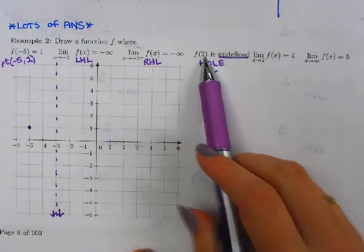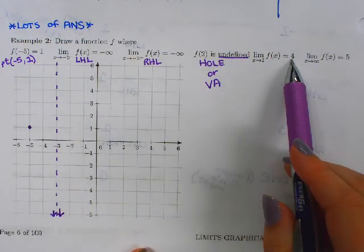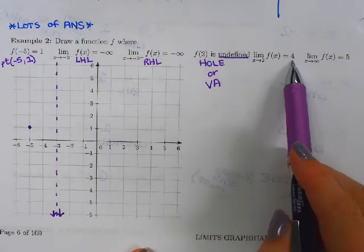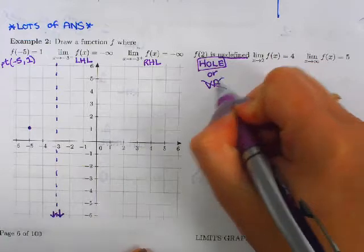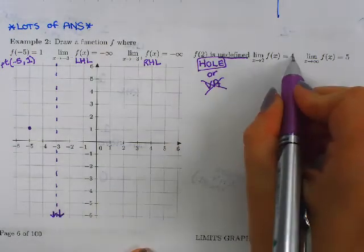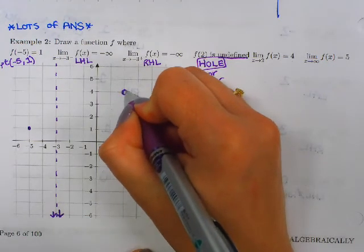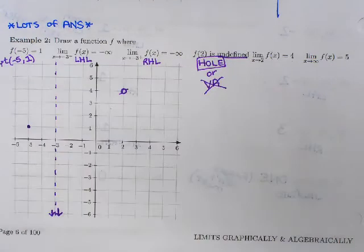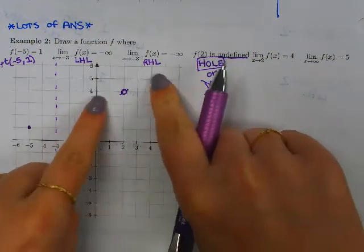So we're undefined at f of 2, and the limit as x approaches 2 is 4. So at 2, do I have a hole or a vertical asymptote if the limit is 4? It must be a hole. So I'm not going to draw a vertical asymptote there. So as x approaches 2 from both sides, I should approach 4. I'm going to put an open circle there. I'm going to do just tiny little lines off of it to remind myself to connect it, or else I can't find the limit if there's nothing to hop onto.